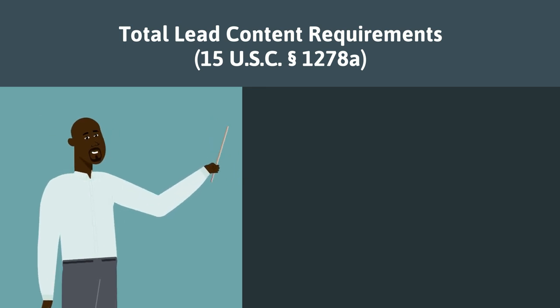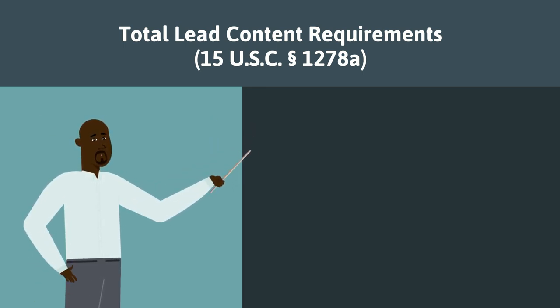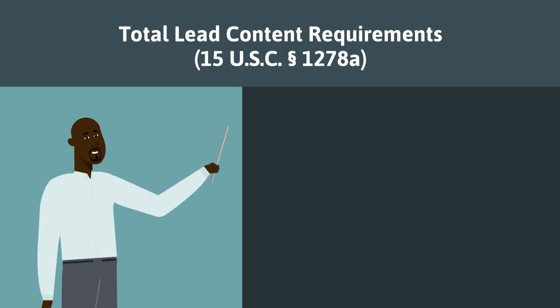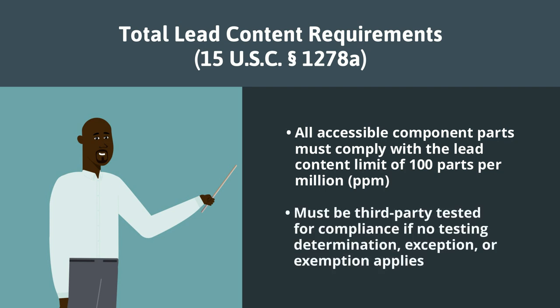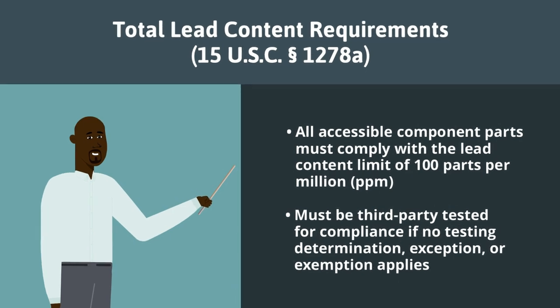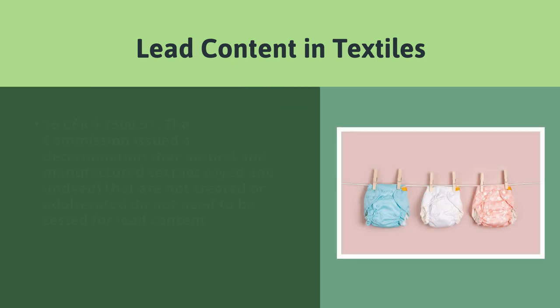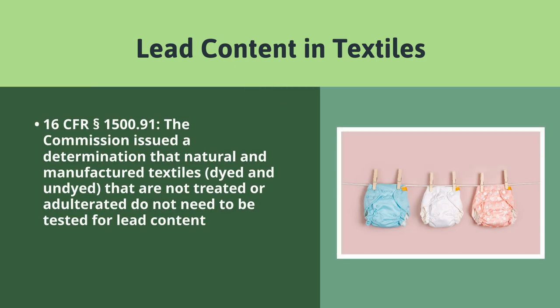Children's products are subject to the total lead content requirements of 15 U.S.C. section 1278A. All accessible component parts must comply with the lead content limit of 100 parts per million. The accessible components must be third-party tested for compliance if no testing determination, exception, or exemption applies. Under 16 CFR section 1500.91, the commission issued a determination that natural and manufactured textiles that are dyed and undyed and that are not treated or adulterated do not need to be tested for lead content.